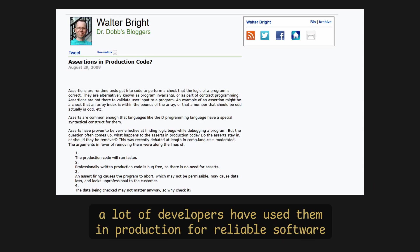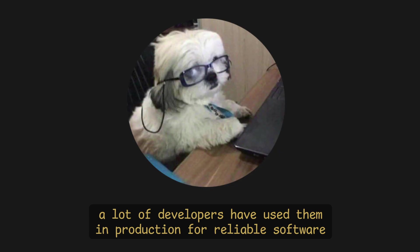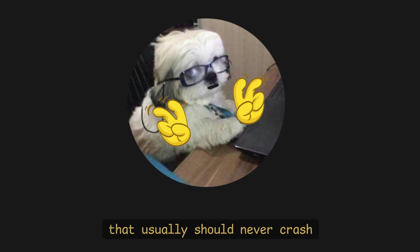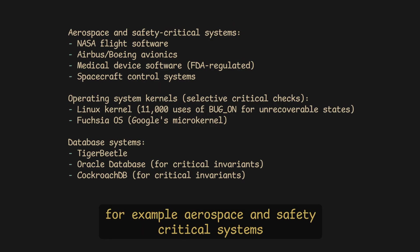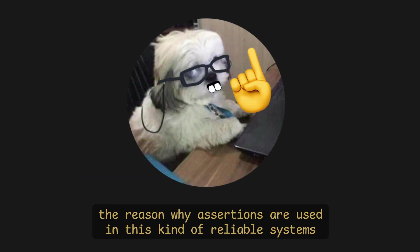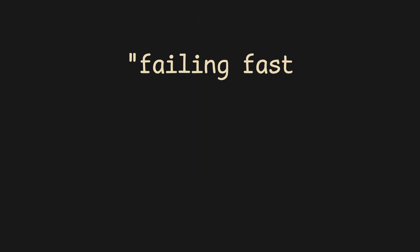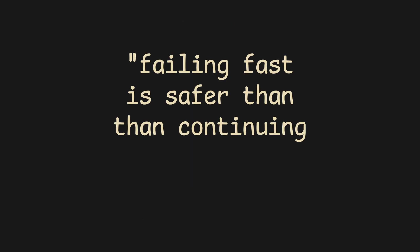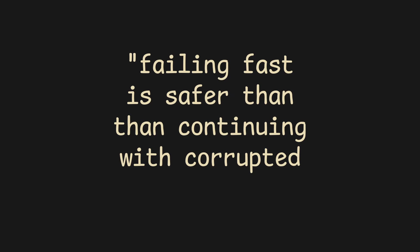A lot of developers have used them in production for reliable software that usually should never crash — for example, aerospace and safety-critical systems, operating system kernels, database systems, among others. The reason why assertions are used in these kinds of reliable systems is they believe that failing fast is safer than continuing with corrupted state.